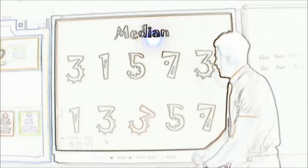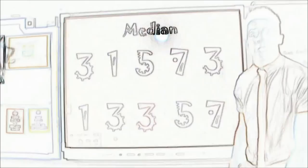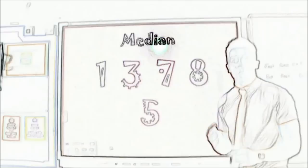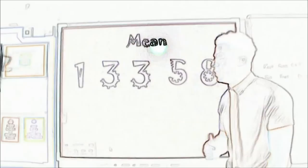Now the median's the middle, let's give it a try. For this example it's easy, the answer is three. What happens if there's two in the middle? Let's see. So what we do to find the middle of these two? Well the answer is five, and that's quite easy to do.